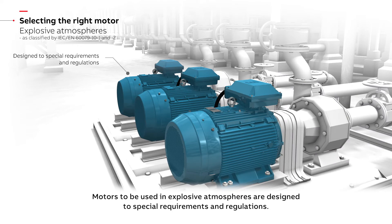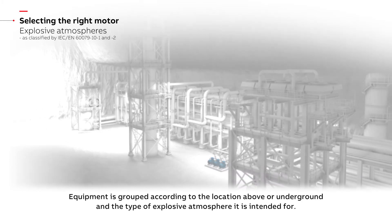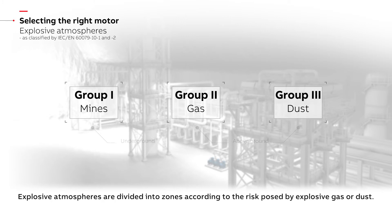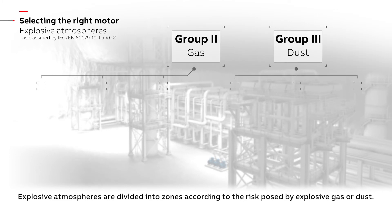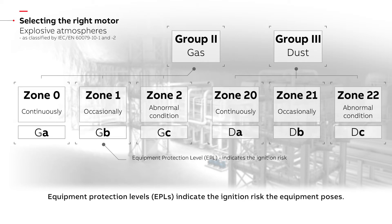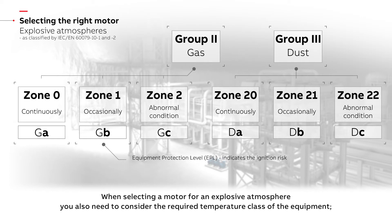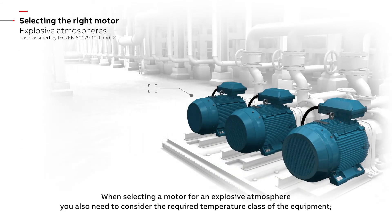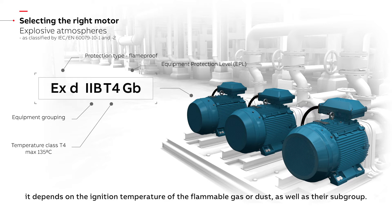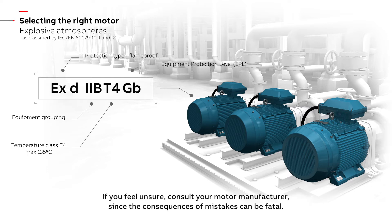Motors to be used in explosive atmospheres are designed to special requirements and regulations. Equipment is grouped according to the location — above or underground — and the type of explosive atmosphere it is intended for. Explosive atmospheres are divided into zones according to the risk posed by explosive gas or dust. Equipment protection levels indicate the ignition risk the equipment poses. When selecting a motor for an explosive atmosphere, you also need to consider the required temperature class of the equipment. It depends on the ignition temperature of the flammable gas or dust as well as their subgroup. If you feel unsure, consult your motor manufacturer, since the consequences of mistakes can be fatal.